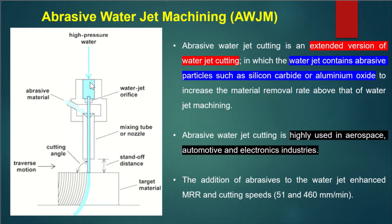High pressure water is allowed to pass through this particular phase, and here they add hard particles like silicon carbide and aluminum oxide. When water flows, these abrasive particles also flow along with the water jet and impinge on the workpiece.